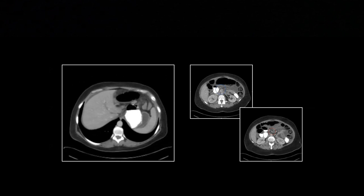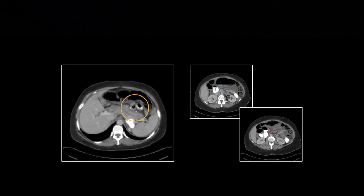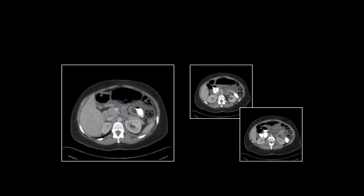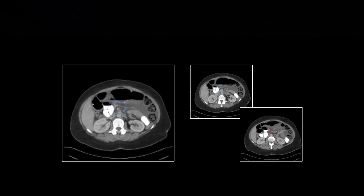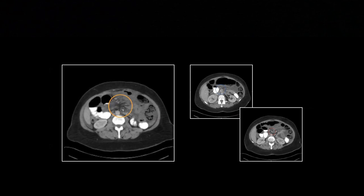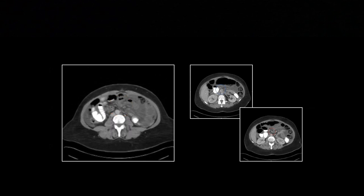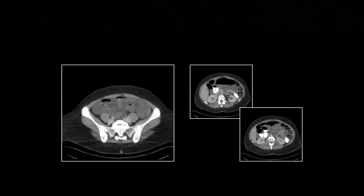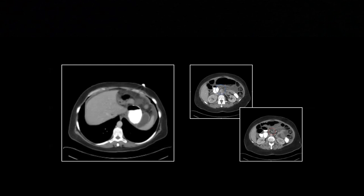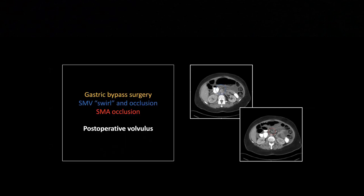It's worth noting that the SMV is your best indicator. Look at both vessels, but the SMV has lower flow, lower pressure, and thinner walls, making it more susceptible to occlusion in these settings. The SMV is probably your best indicator and will be the one that goes first.